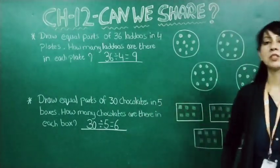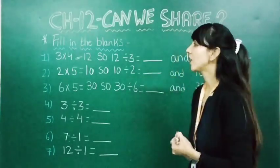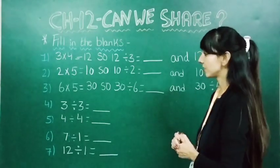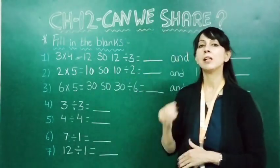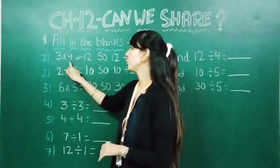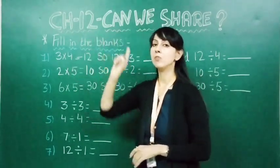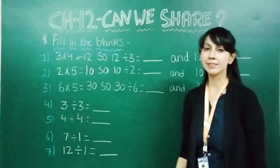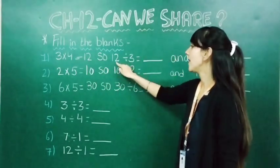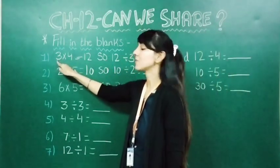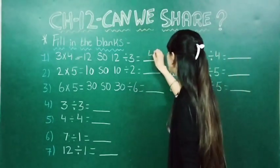Students understood how to divide equally in equal boxes. Let us see another exercise. In this you can see multiplication and division together — division tables box up. Three fours are twelve. In multiplication, three into four — these two numbers are called factors. The number to be multiplied is called the multiplicand, the number by which it gets multiplied is called the multiplier, and the answer we get is called the product. Now we will divide this: twelve divided by three.